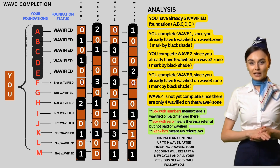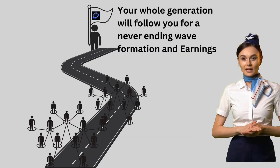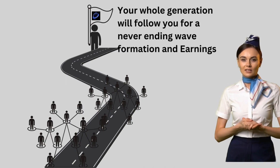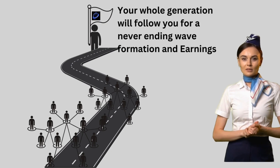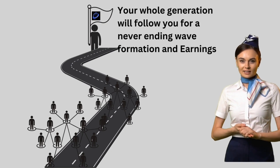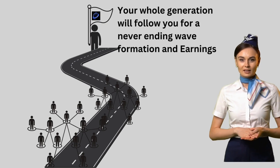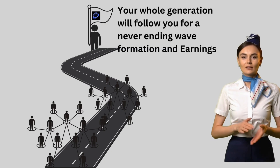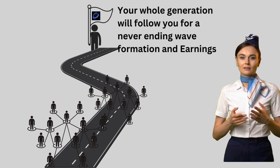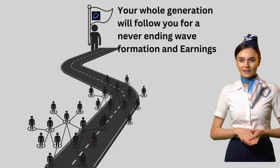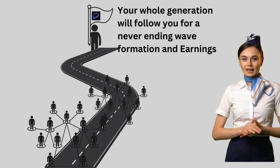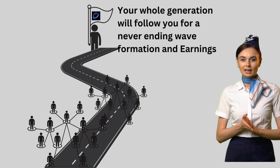Kapag natapos na ang nine waves mo, tapos na din ba ang kitaan? Hindi pa — dahil idinesign ang company para sa unlimited earnings. Pagkatapos mo mabuo ang nine waves, magre-restart ulit ang account mo para sa second batch ng formation ng wave. Sa second cycle, ang OAG graduate mo ay susunod sa network mo — lahat ng mga kasama sa una mong cycle — kaya parang automatic na at mabilis ang pagbuo ng waves. Pag natapos ulit ang second cycle, uulit na naman — hanggang sa walang katapusan. Ito ay may forever sa nine waves. Maraming salamat po, goodbye and happy earnings!